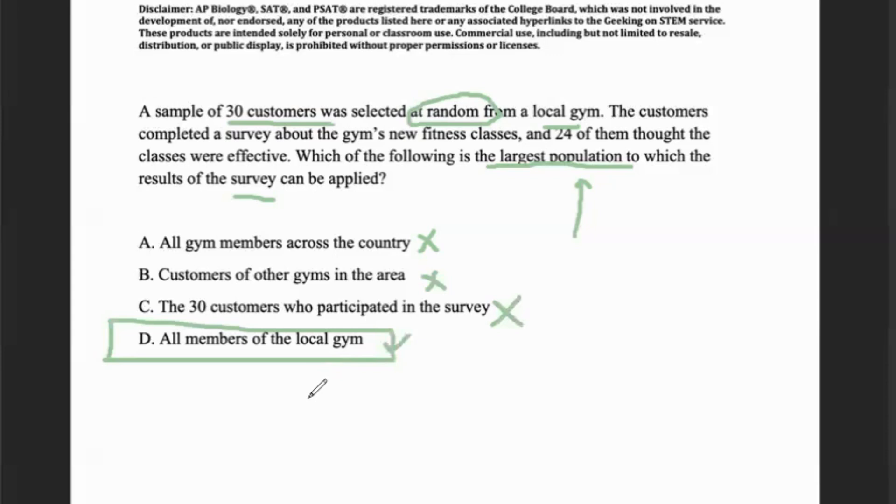So I hope this helps, and that now when you see a problem just like this in the new digital SAT, you can quickly solve in less than 2 to 15 seconds, because now you know to look for the key terms: largest group, largest population, and then they're completing a survey. I hope this helps.